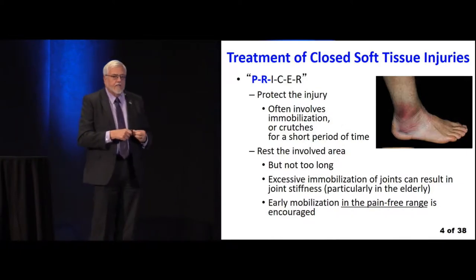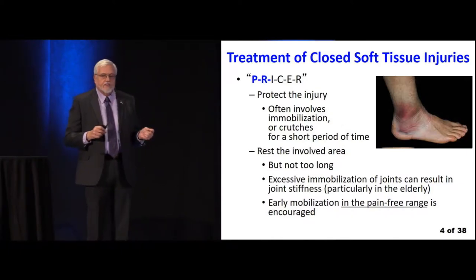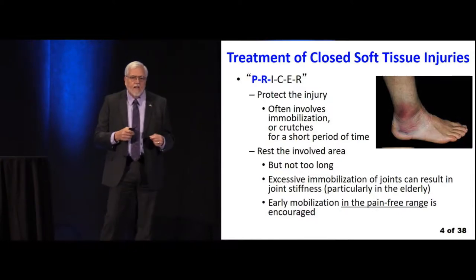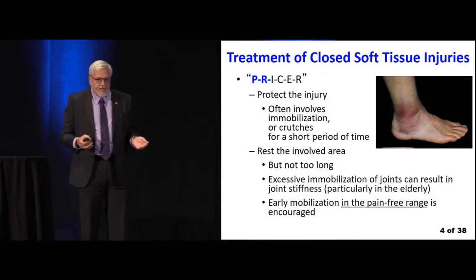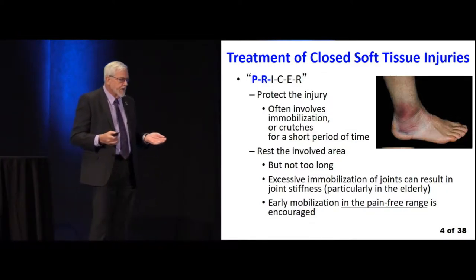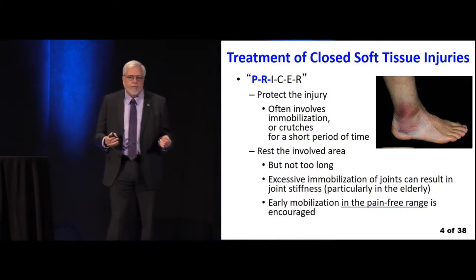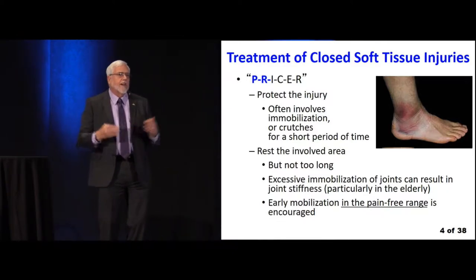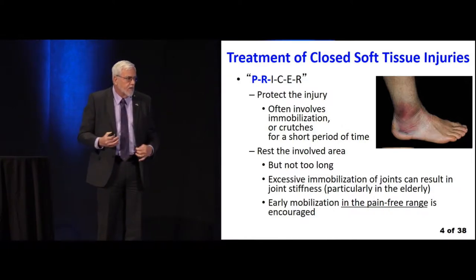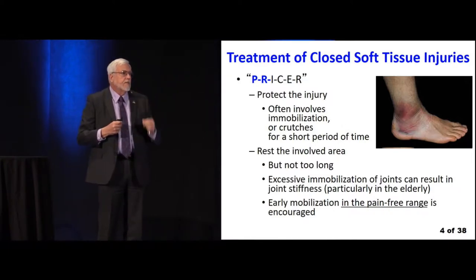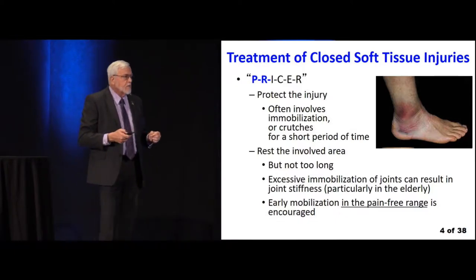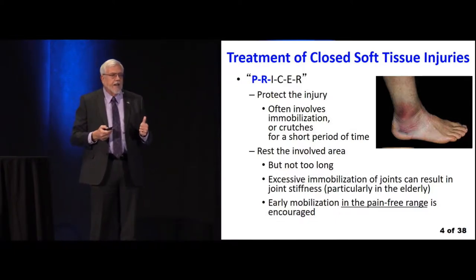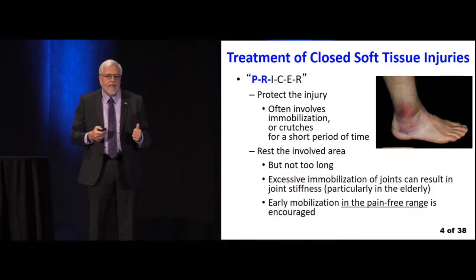Here's the mnemonic for taking care of closed soft tissue injuries: PRICER — P-R-I-C-E-R. The P stands for protecting the injury, which often involves immobilization or crutches for a short period of time. Remember when we used to immobilize people forever — in splints or casts for weeks or even months. We don't do that anymore because we found out it was more harmful. But we do need early on to protect the injury.